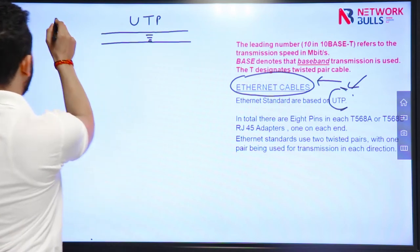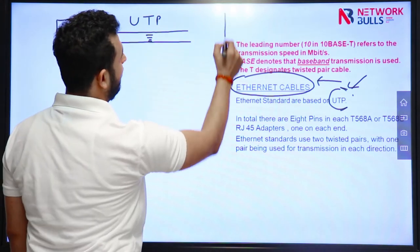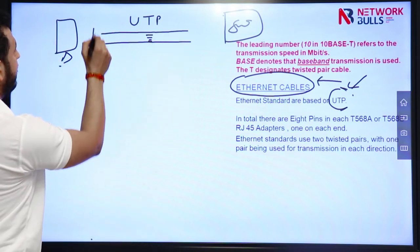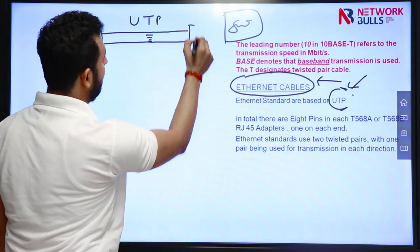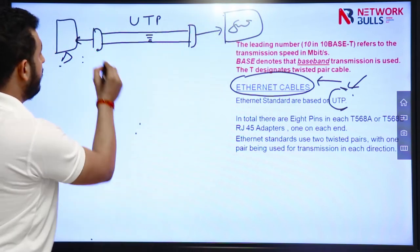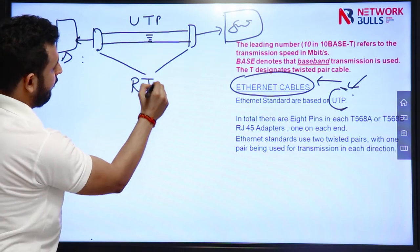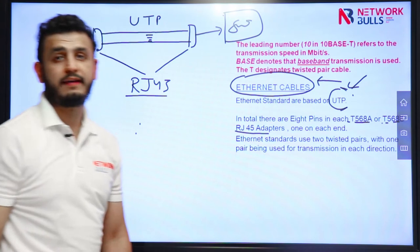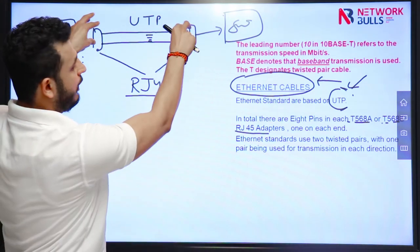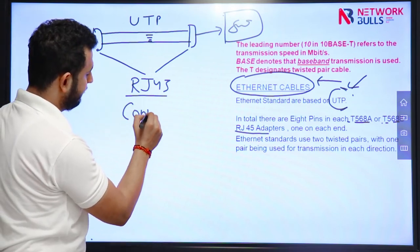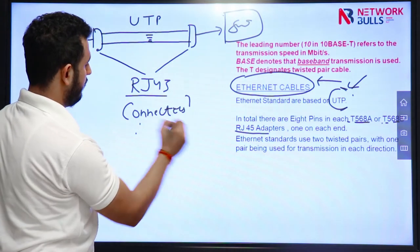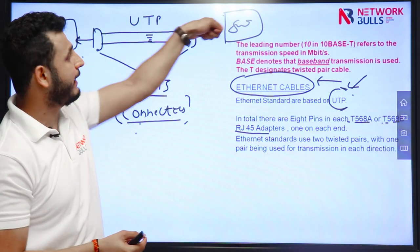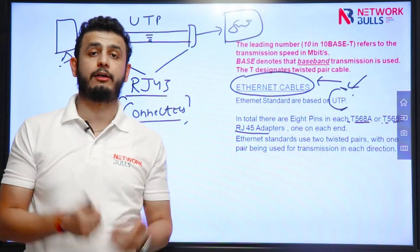To connect a UTP cable to a computer or a switch, we need adapters that we can connect to the cable and insert into the device. These adapters are called RJ45 adapters, also called connectors. The particular standard is T568A or T568B, and we have to use the same standard on both ends. In RJ45 connectors there are 8 pins, and we join these connectors with the wire before inserting it into whichever device we want to connect.